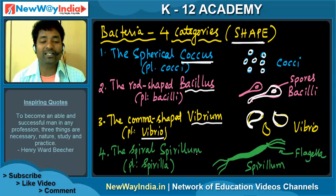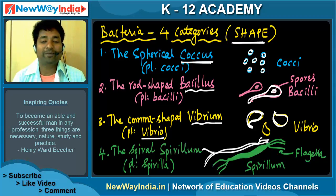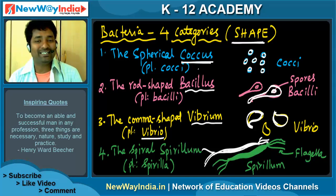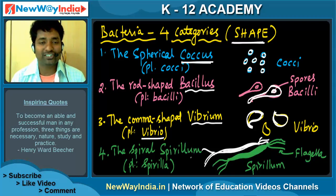The spiral-shaped bacteria are called Spirillum, plural Spirilla. They look like a thread in a spiral form and have flagella. These are the four different types of bacteria based on their shape: Cocci, Bacillus, Vibrio, and Spirillum.